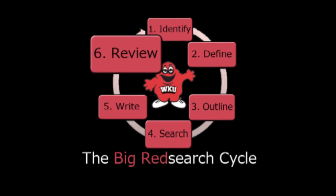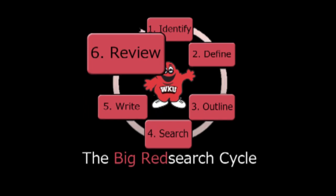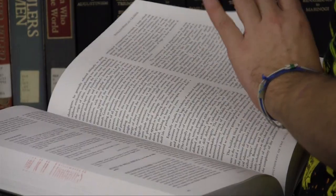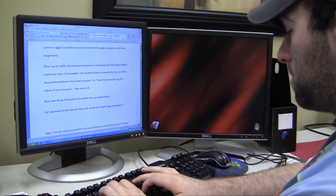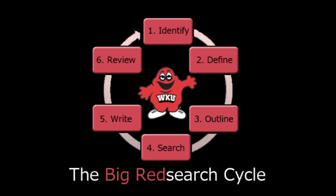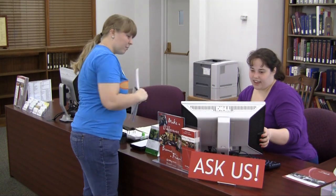Step 6: Review to see if you've met all the requirements. Go back to Step 1 — didn't I say Red Search Cycle? Re-read what you have written. Does it make sense? To avoid plagiarism, make sure you've correctly cited your sources. Check, correct, check again. Go back to any step to improve your final draft. Are you satisfied? There is a lot more to successful research than just these six steps. Breathe a sigh of relief — and remember, librarians at WKU Libraries are always here to help you. Don't hesitate to ask us. Thanks for watching!